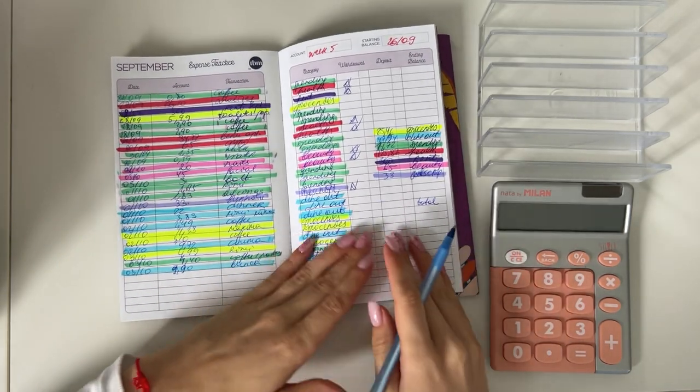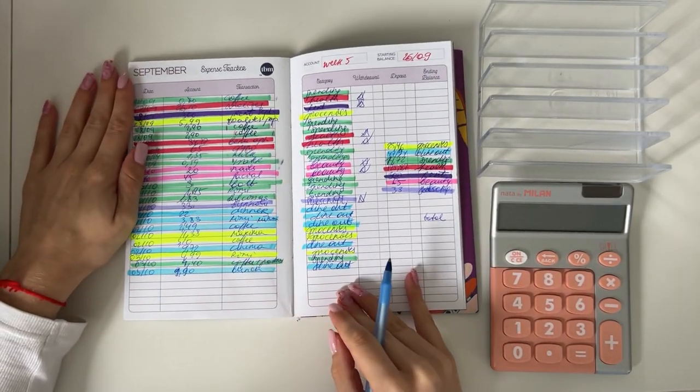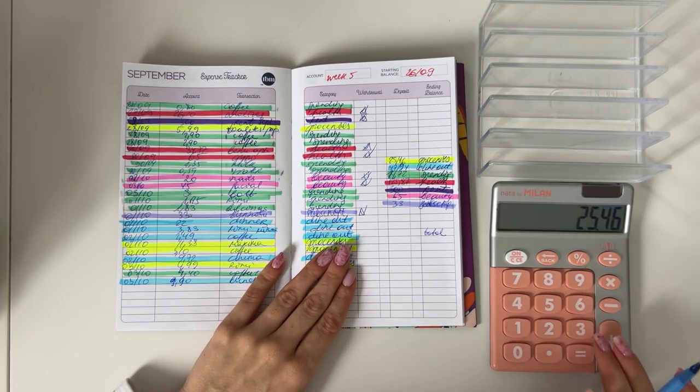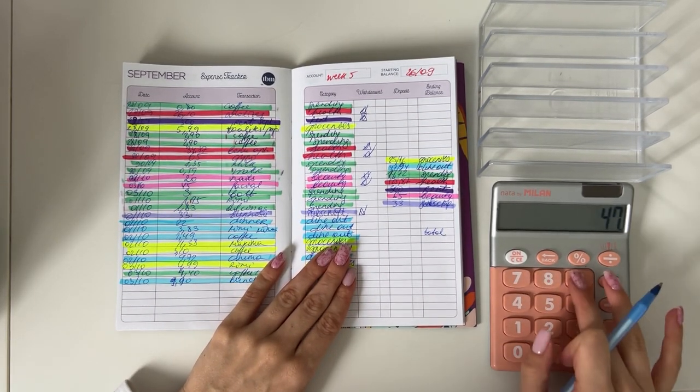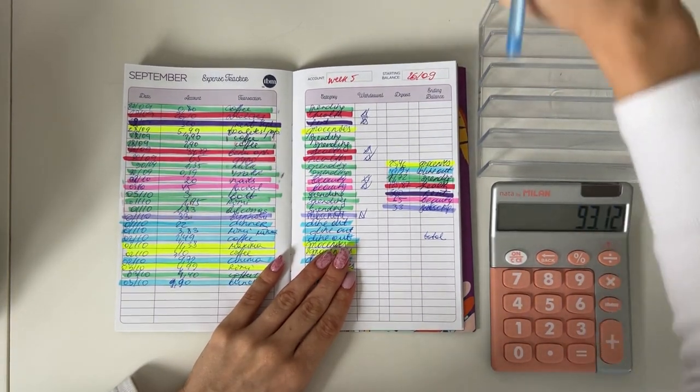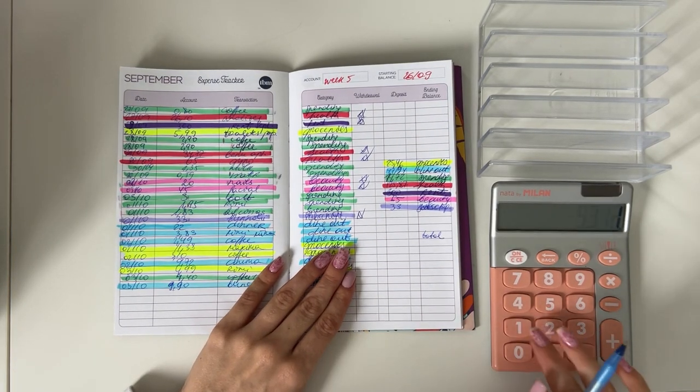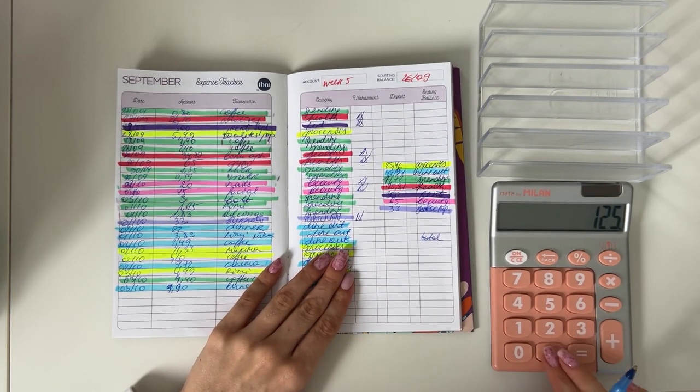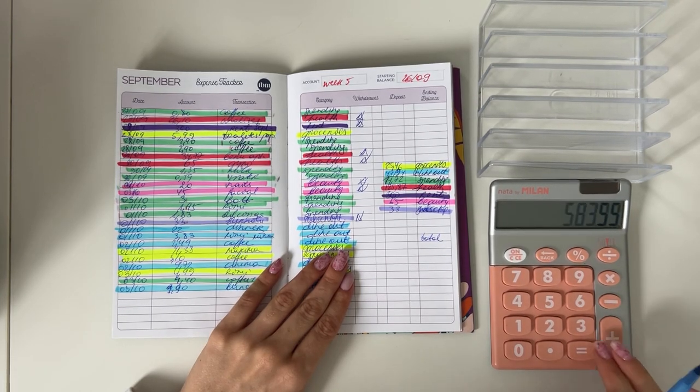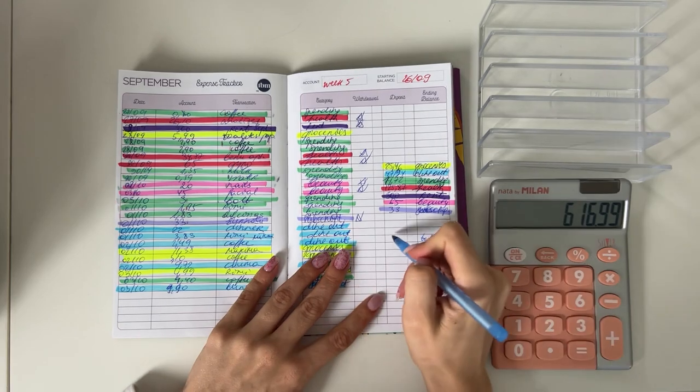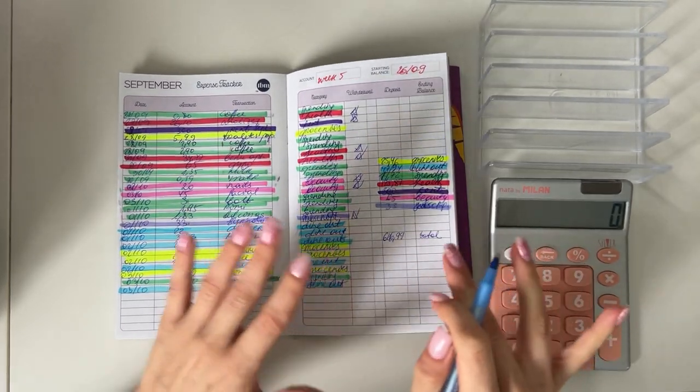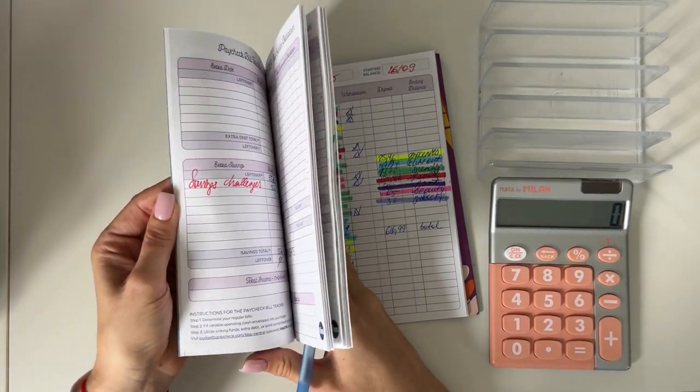This is the expenses for this week. We had $25.46 for groceries, $47.94 in dine out, $19.72 in spending. It's been a crazy, crazy week you guys. $125.87 for health, $300 for rent, $65 in beauty, and $33 in subscriptions. So $616.99.